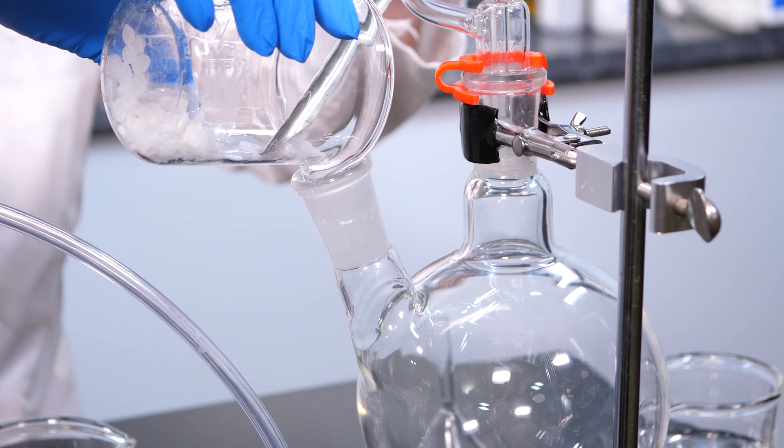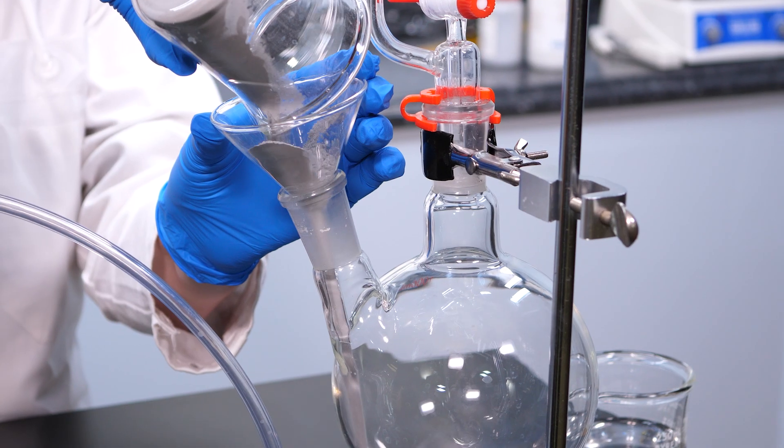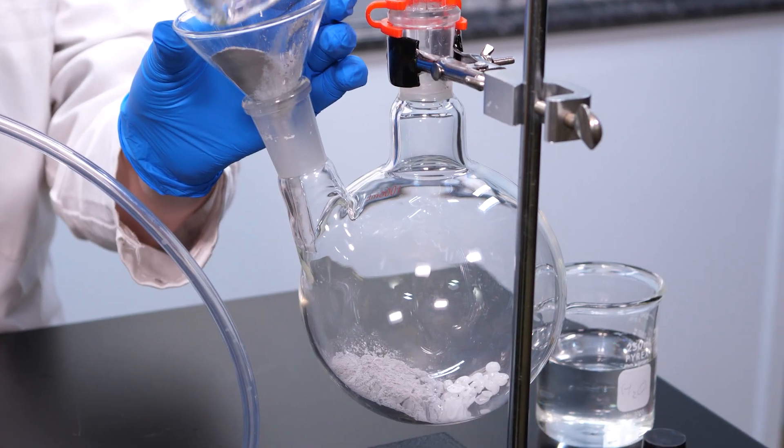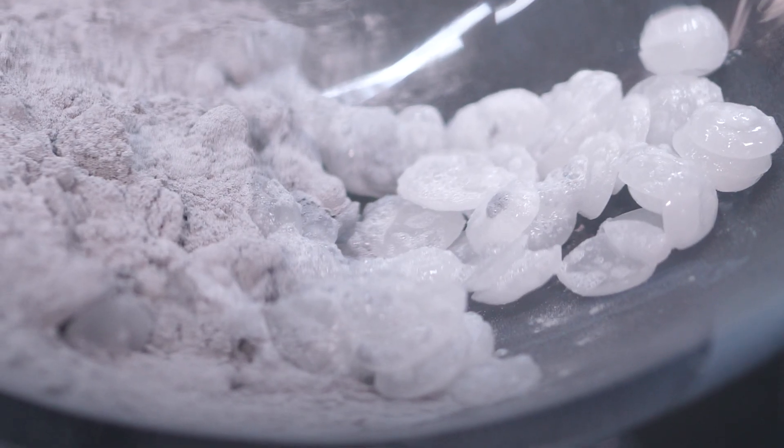First, we add solid sodium hydroxide to this reaction flask. Then, we add the aluminium powder. As you can see, the reaction is taking place slowly.